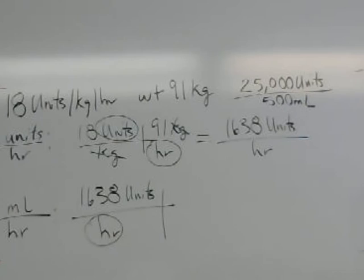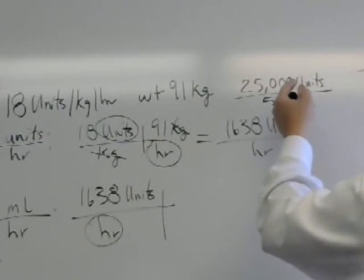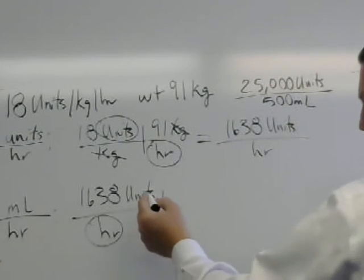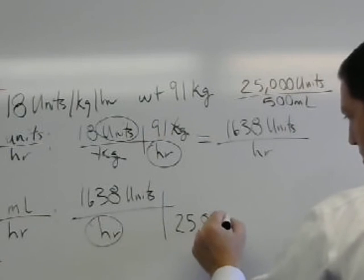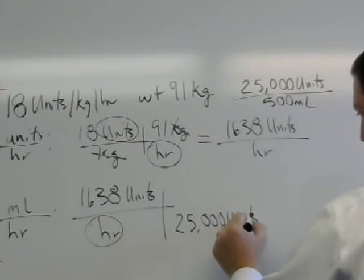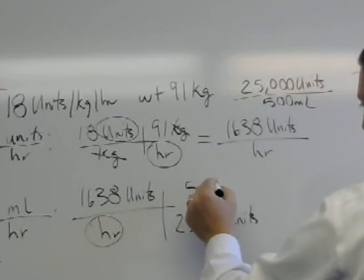Well I still have my bag here. I have to know how much is in each bag, and so I can then say I need to cancel out units because units is something I don't want. So I'm going to flip this over and I'm going to put the units on the bottom and the 500 mLs on top.